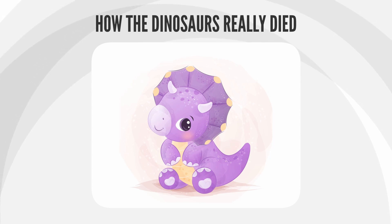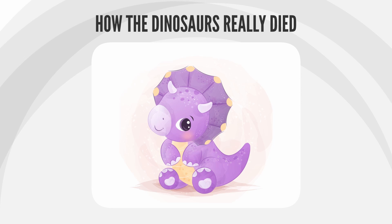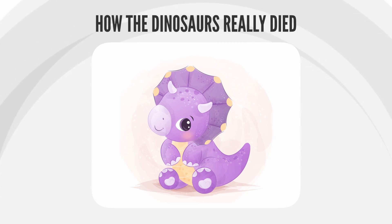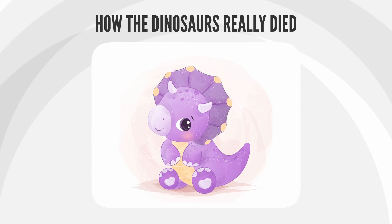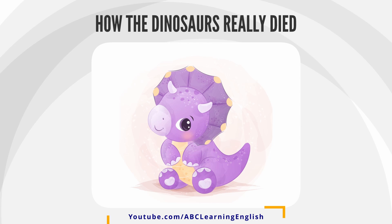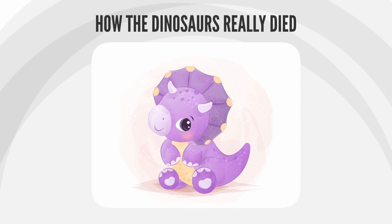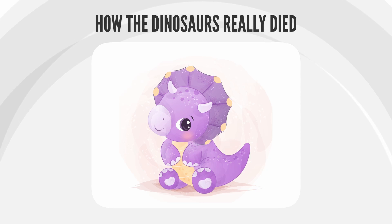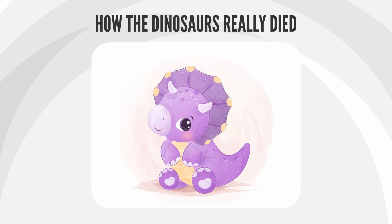How the dinosaurs really died. Many scientists and intellectuals think that dinosaurs died when an asteroid smashed into the earth millions of years ago. However, recently, there has been some controversy over this theory. Some scientists think that it isn't accurate. They think that a tiny insect may have been the biggest factor in the death of these huge creatures.